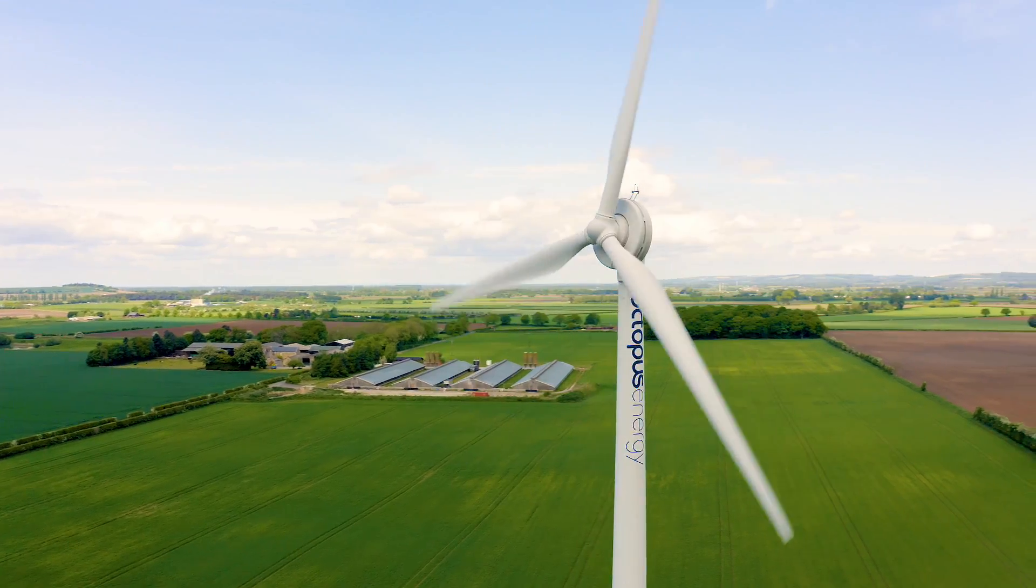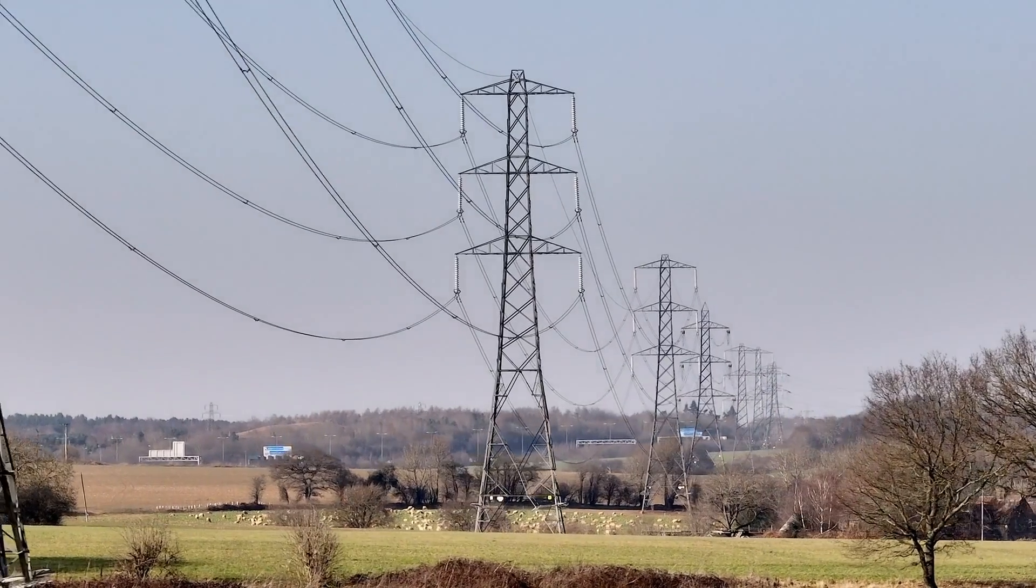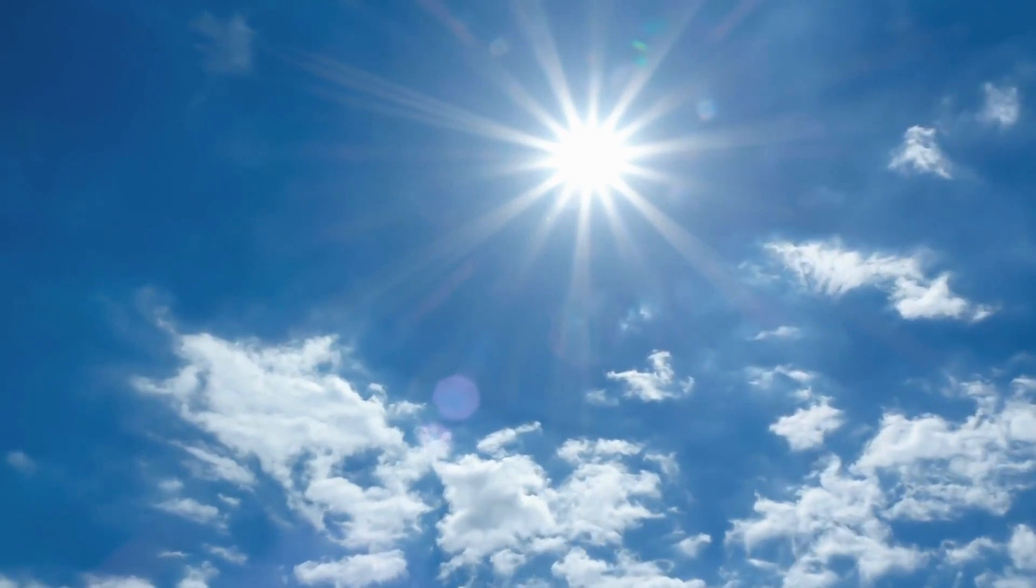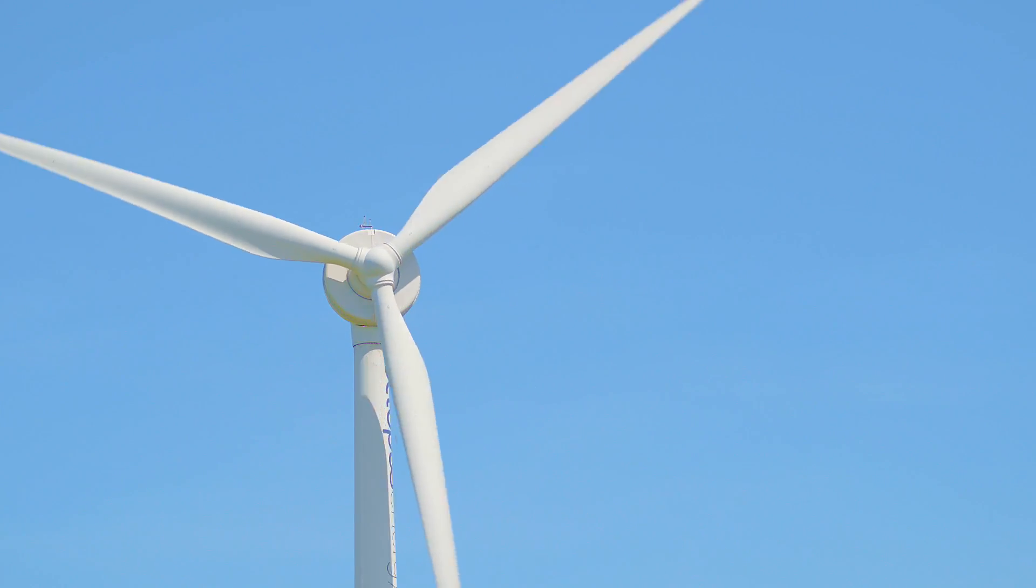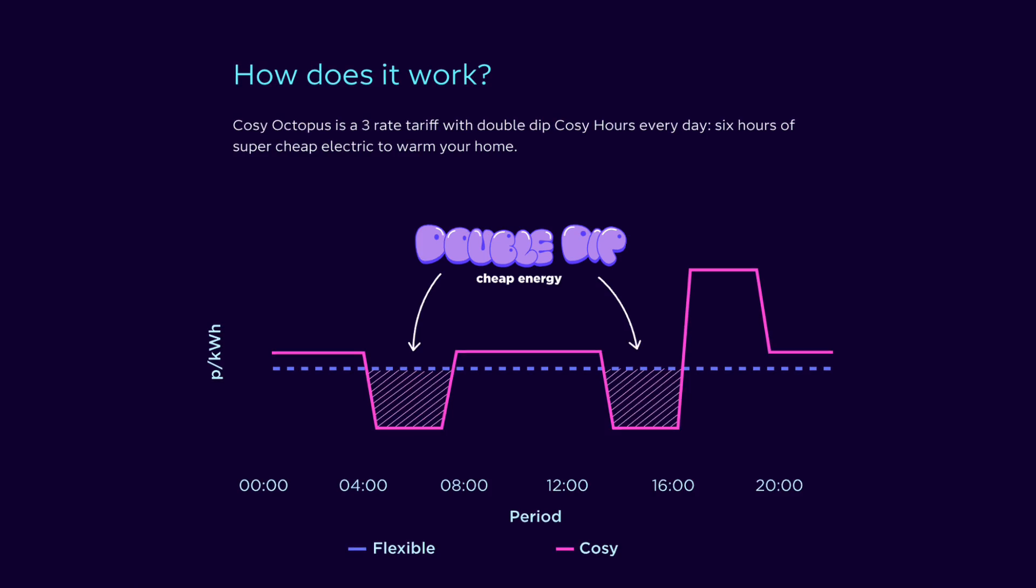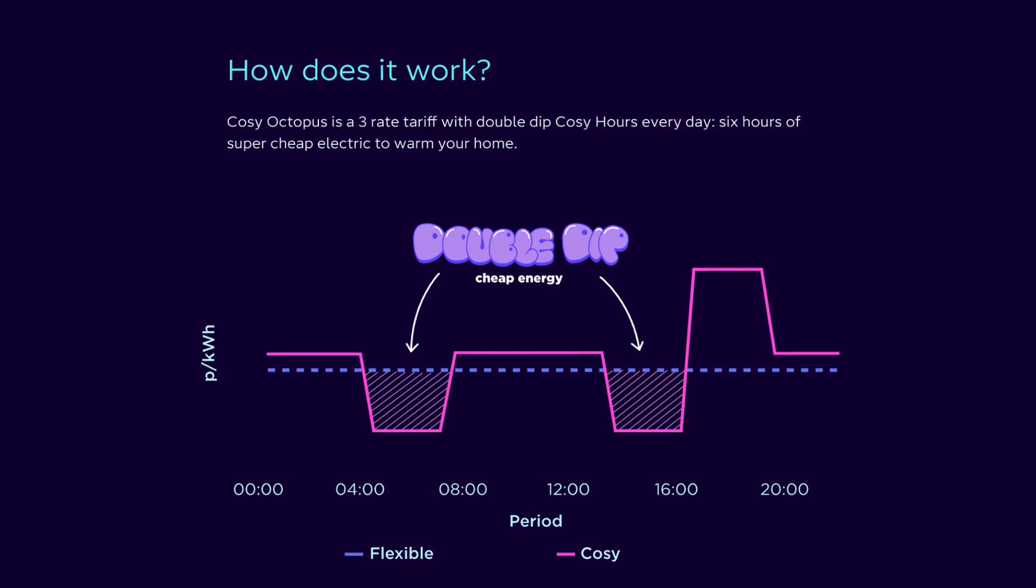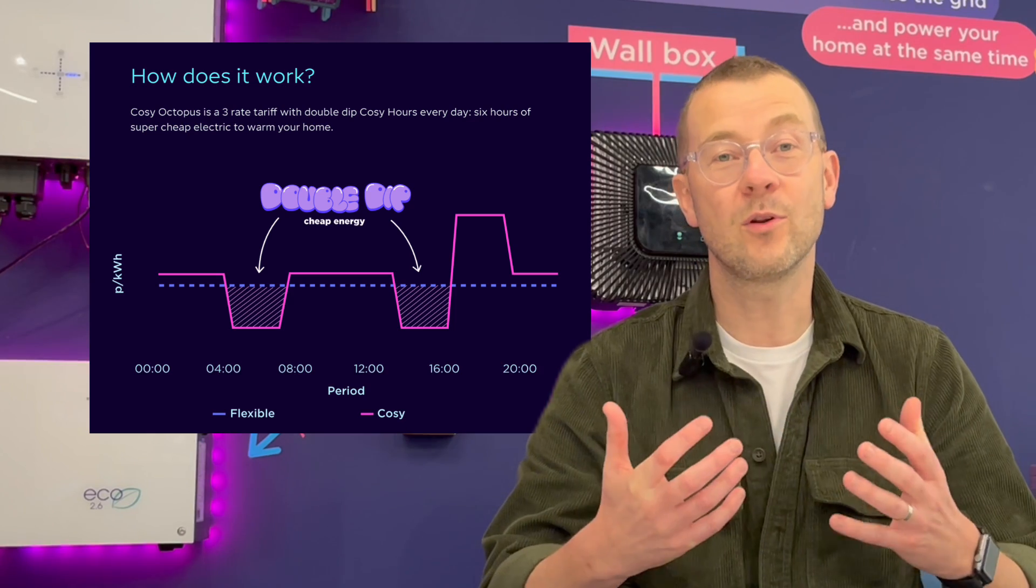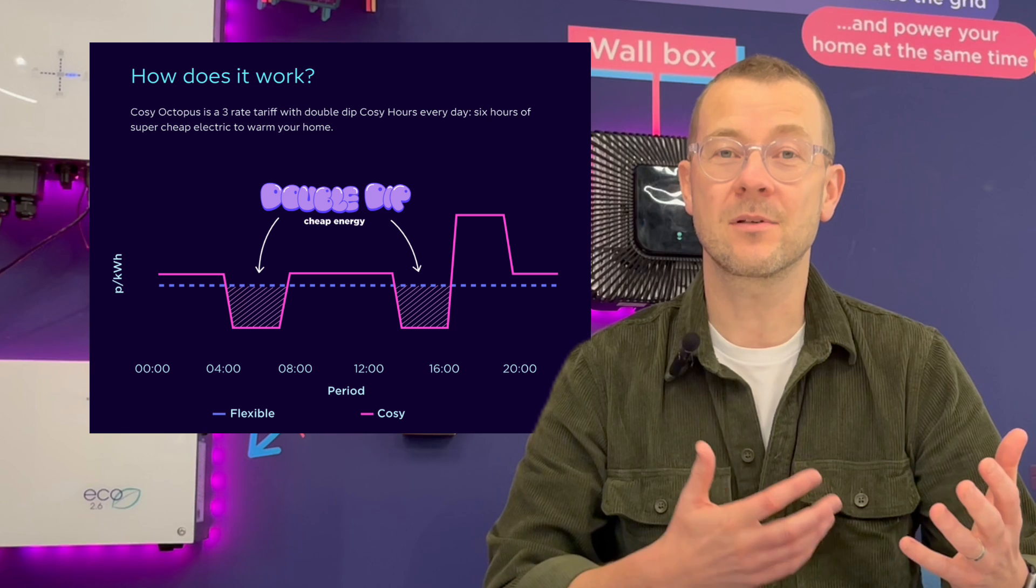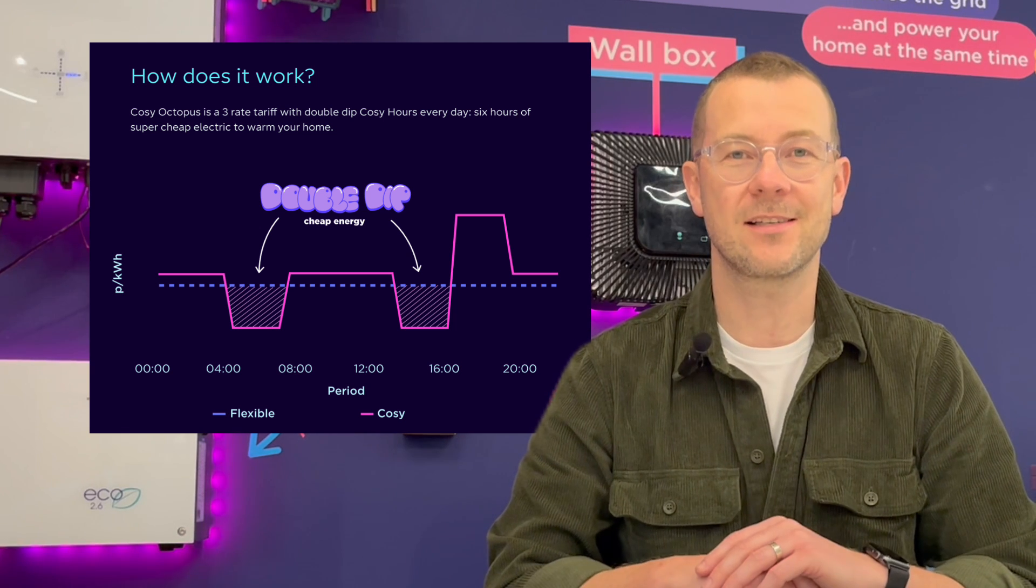Heat pumps run on electricity and currently electricity is more expensive than gas. Making the most of a smart heat pump tariff is absolutely key in keeping the running costs of a heat pump down. How? By offering super cheap rates during the day when there is tons of green energy available. With Cozy Octopus, you can tap into six hours of super cheap electricity to keep your home warm. Therefore, the more energy you use out of peak times, the more you can save versus a standard tariff.